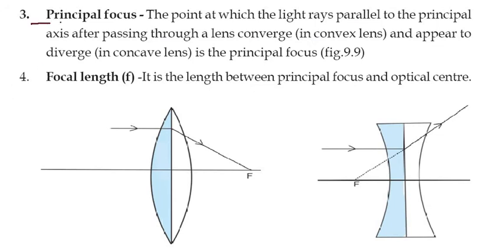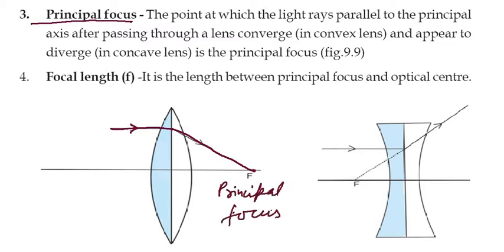Now come to the principal focus. What is the principal focus? The point at which light rays parallel to the principal axis, after passing through a lens, converge in a convex lens and appear to diverge in a concave lens, is called the principal focus. You can see the light parallel to the principal axis — after refraction it goes through focus, and that F is the principal focus.